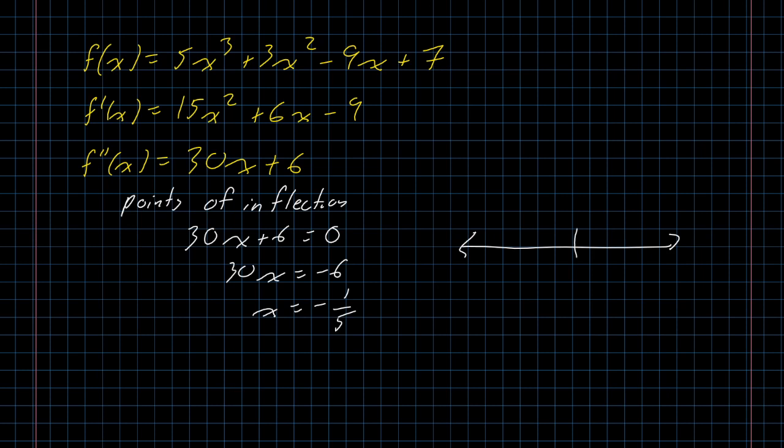x equals negative one-fifth. And much like we did, again, with the first derivative, if I plot negative one-fifth on a number line and I start looking around it, if I look at something above negative one-fifth, like 0, I get out that the second derivative is positive. If I look at something below negative one-fifth, like negative one, well, 30 times negative one is negative 30 plus 6 is negative 24, which comes out negative. So this graph will be concave up on the interval from negative one-fifth onward forever to infinity, and this graph will be concave down from negative infinity up to negative one-fifth.